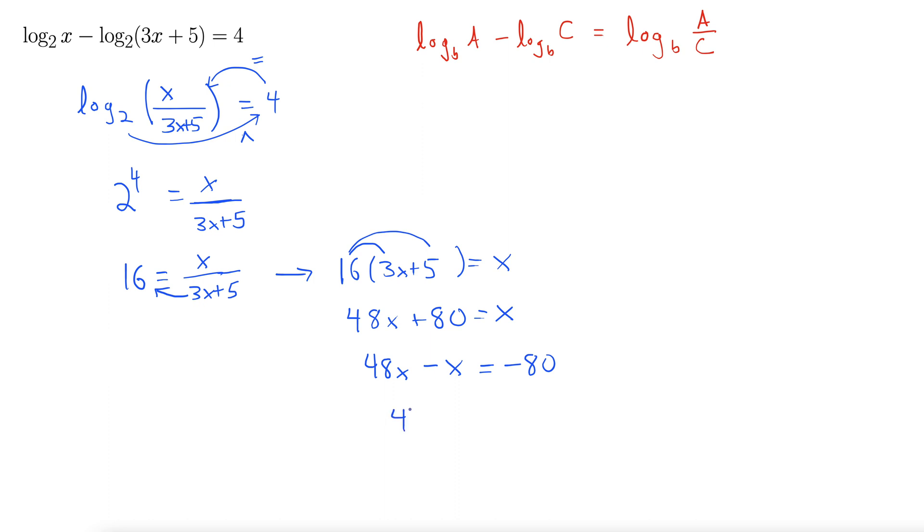Progress. 47x equals negative 80. Well, that's a strange fraction. Solving that out gives us x equals negative 80 over 47.